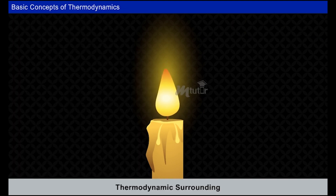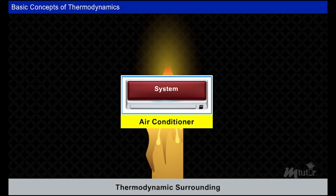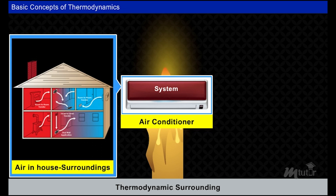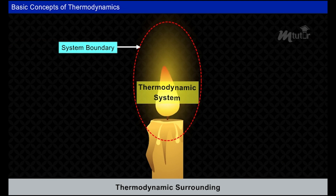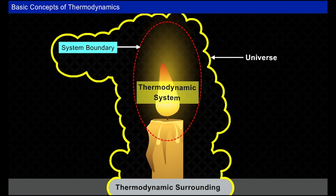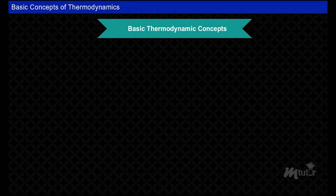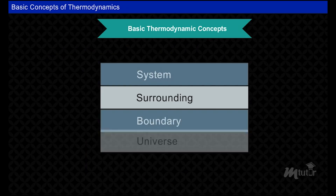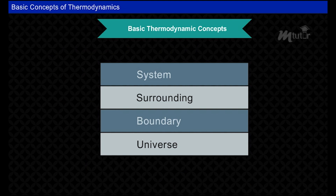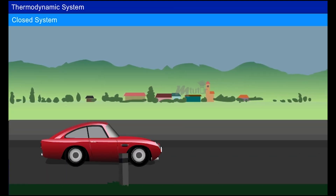Surroundings: anything outside the system which affects the behavior of a system is called surroundings or environment. If an air conditioner is a system, then the air in the house and the lawn are the surroundings. System and surroundings are separated by a boundary, which may be fixed or movable, and real or imaginary. It will not occupy any volume or mass in space and has zero thickness. System, boundary, and surroundings together comprise a universe.